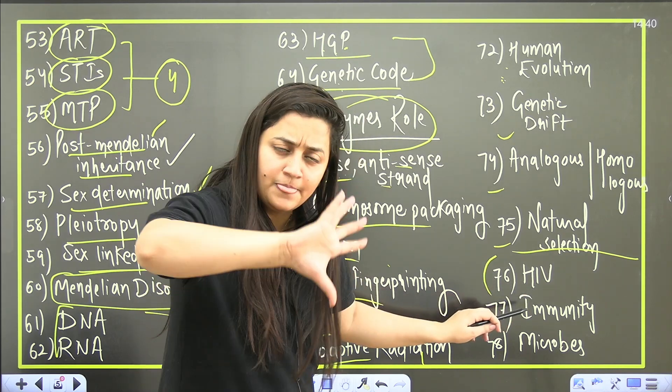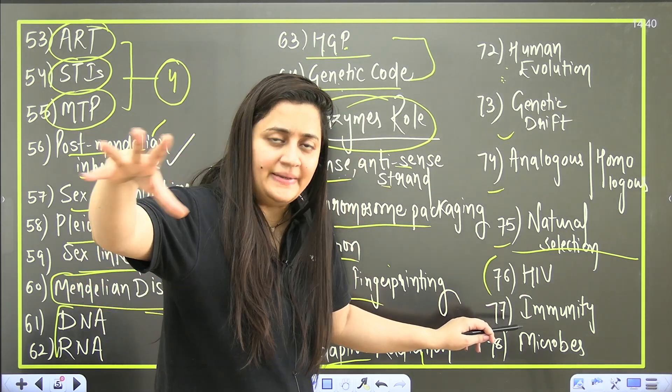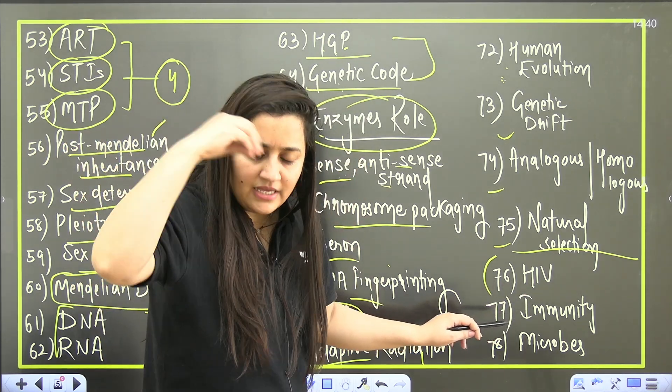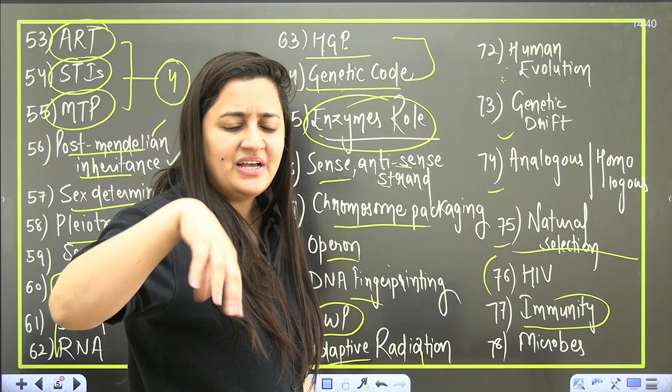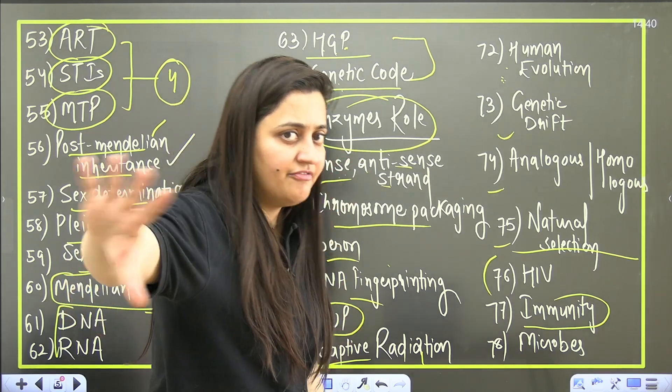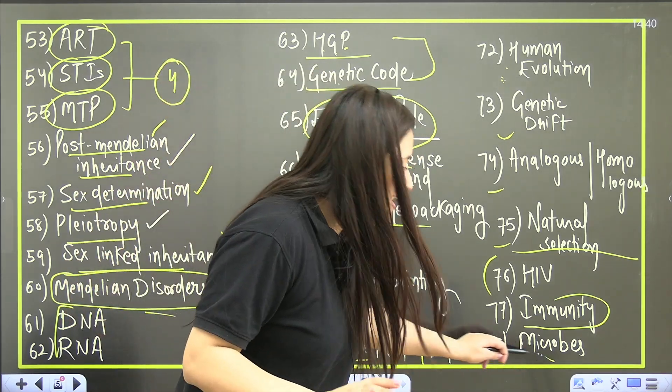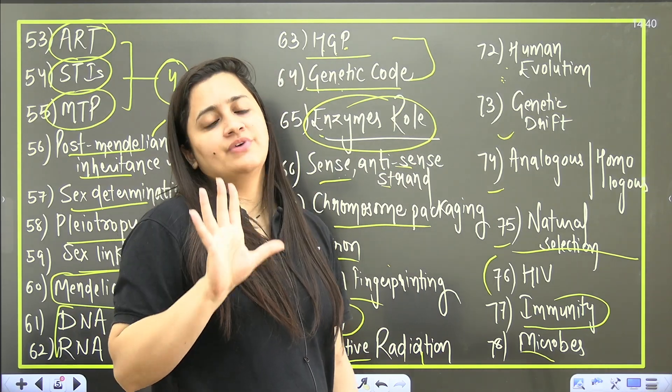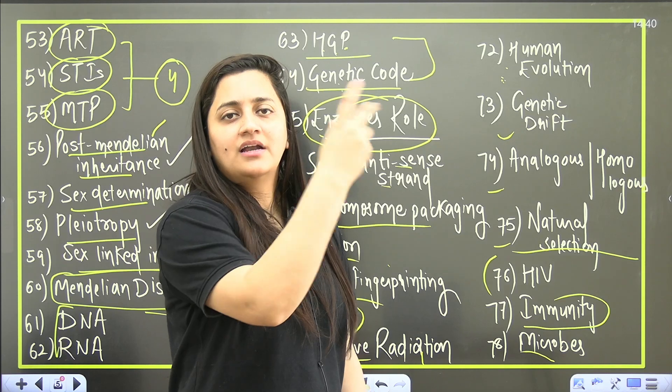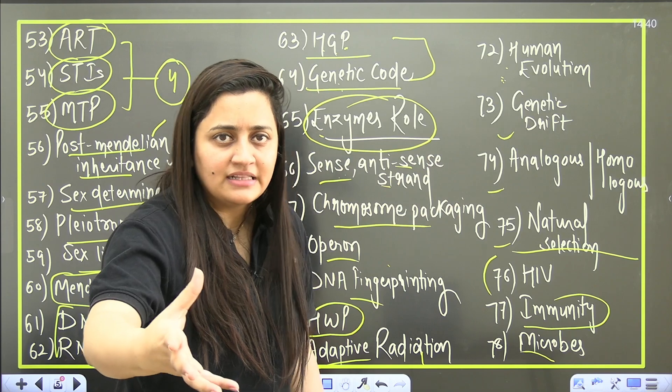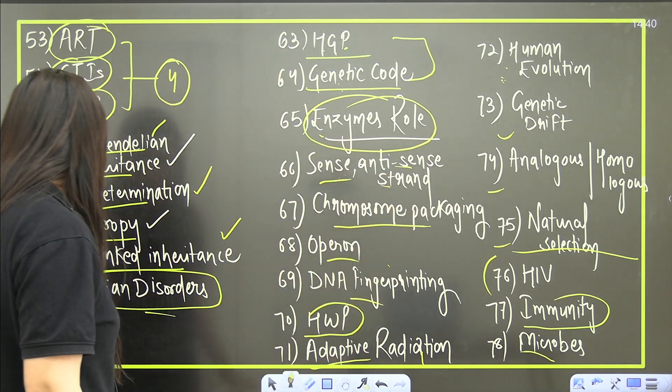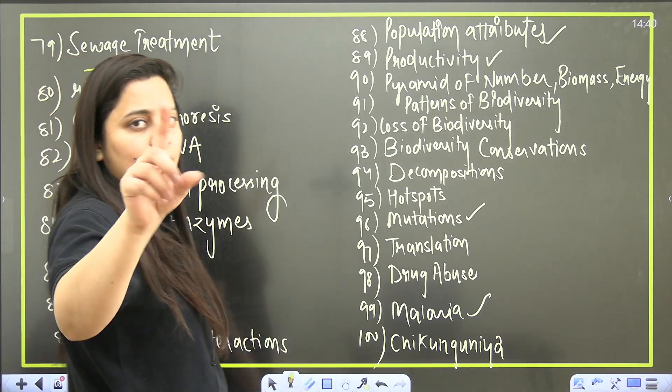Then HIV - the complete life cycle of this you should know about it. Immunity - what is active, what is passive, what is specific, what is non-specific, everything you have to cover. Microbes - two questions will come from microbes part, which one is giving you the statins, from where you are getting the cyclosporine. For sure question will come. Sewage treatment - one question this year definitely will come from it separately.